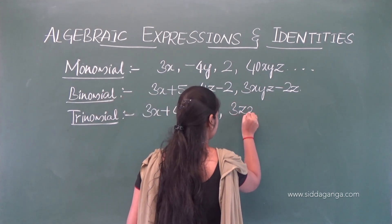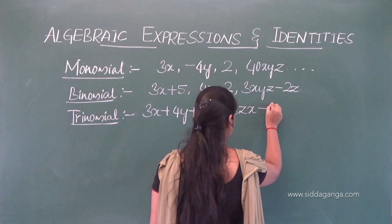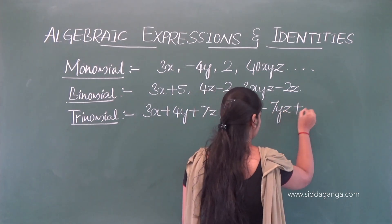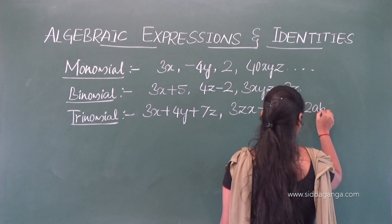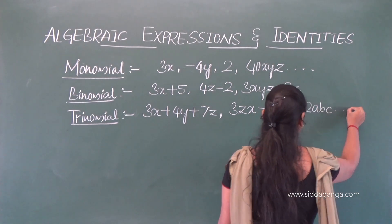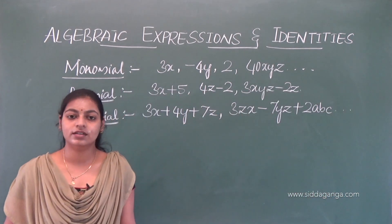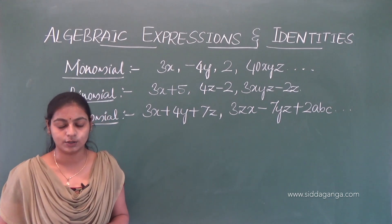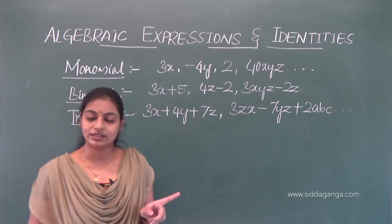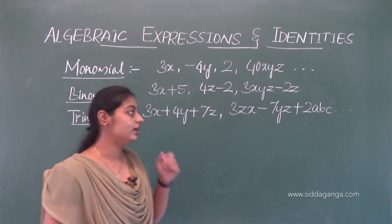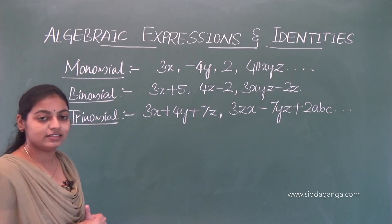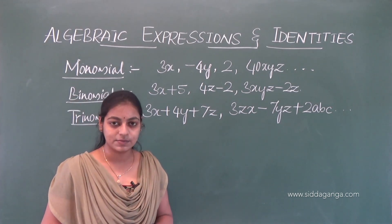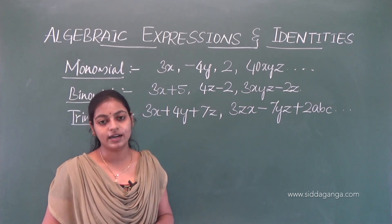For trinomial, consider examples like 3zx minus 7yz plus 2abc and so on. An expression that contains three terms is known as a trinomial. So: one term is monomial, two terms is binomial, and three terms is trinomial.